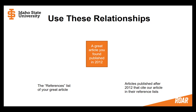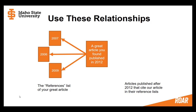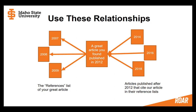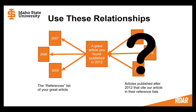Here's a visual representation of how citation mining works. Say you found a great article published in 2012. You'll want to look at the references list of this article to find other highly relevant works. Unfortunately, the stuff you'll find in there will be older than 2012, and 2012 is already pretty old for medical research. A really great way to find more relevant results is to look for articles published after 2012 that cite our article in their reference lists. But unlike citations from the past, we won't find these future citations in the PDF copy of our article—that would have required the author of the 2012 paper to know what would be published in 2014, 2016, etc. And generally the authors of journal articles don't have the power to see the future.